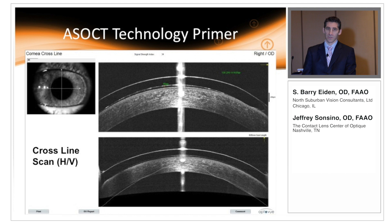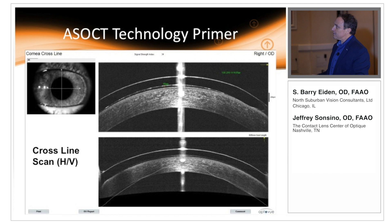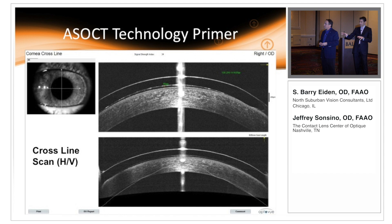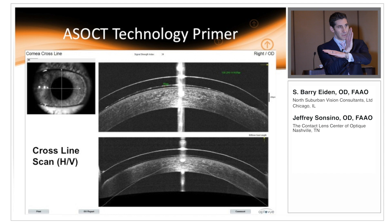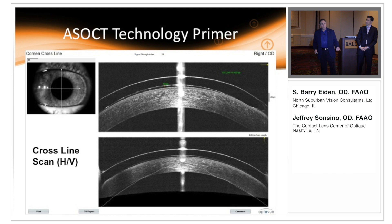The cross scan is the mainstay of what we do, at least initially, in the central portion of analysis of vaulting lenses — you get a vertical and horizontal cut. We reconciled the terminology: every patient we put in front of an OCT, the very first thing we do is a cross scan. Once we do that and identify potential danger zones or areas to focus on, we then use line scans to refine. So we both start with a cross scan and then refine with line scans.